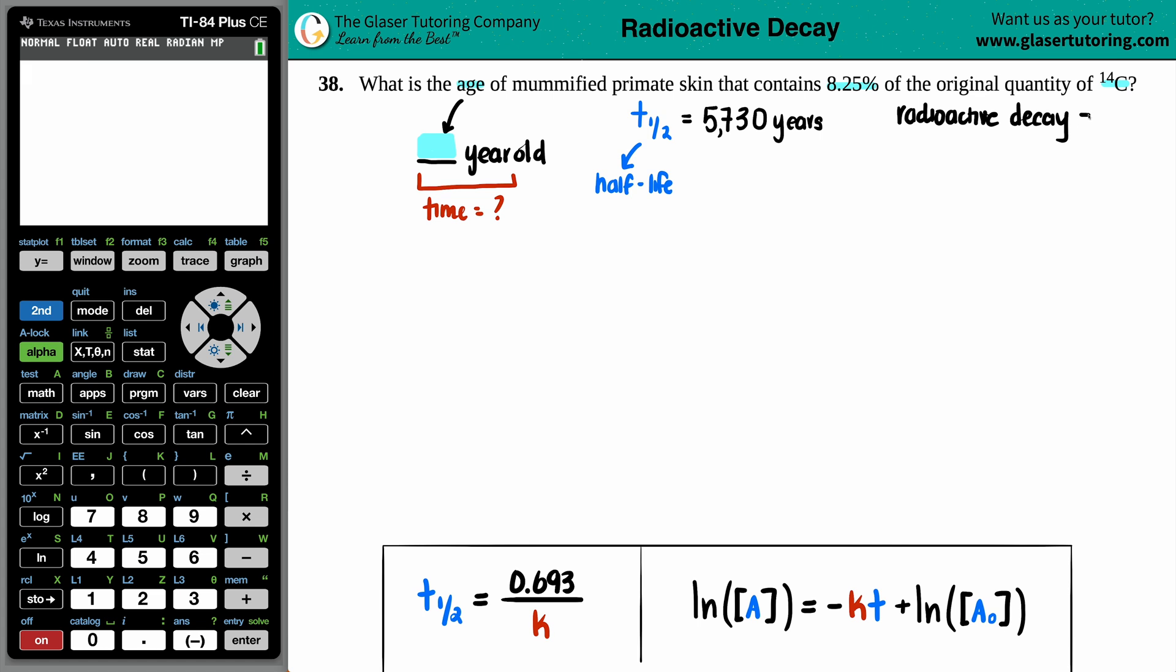But now, the thing is, just know that any type of radioactive decay doesn't matter what atom they give you. If it's uranium, nitrogen, plutonium, it doesn't matter. But all of these will undergo first-order kinetics.